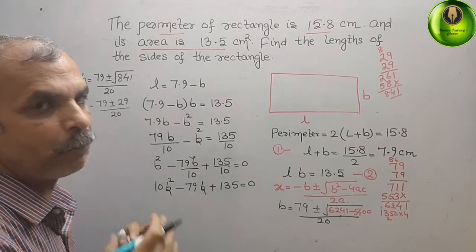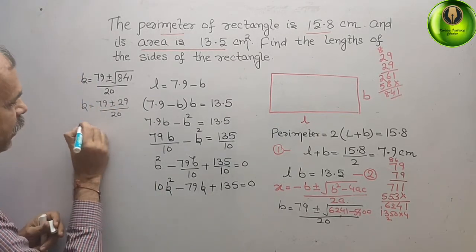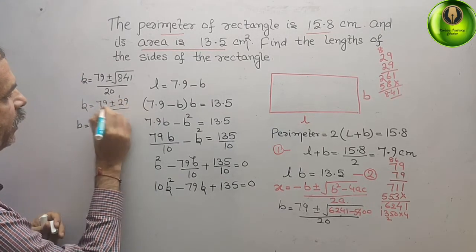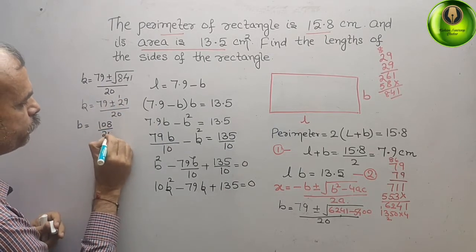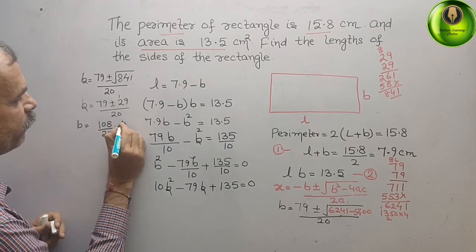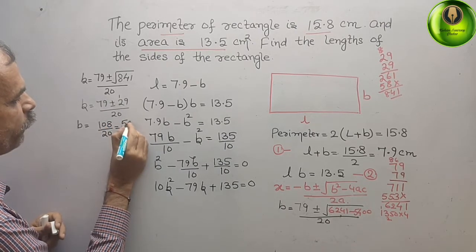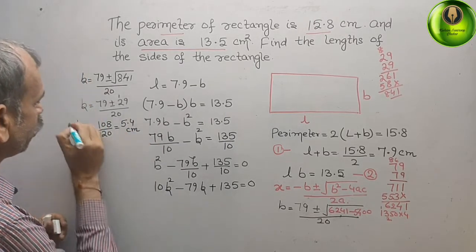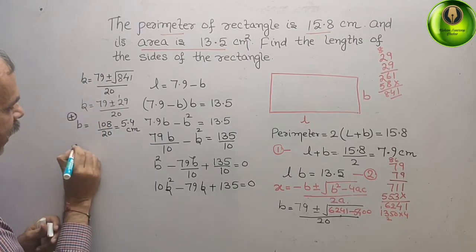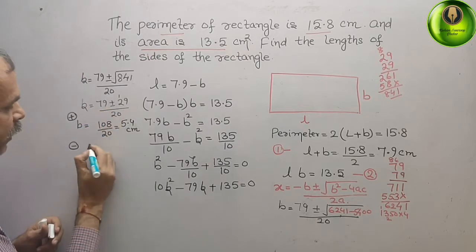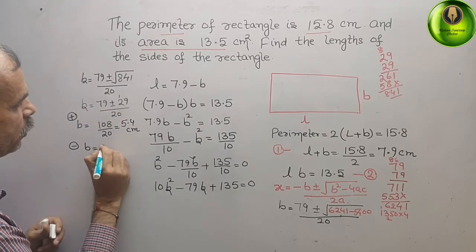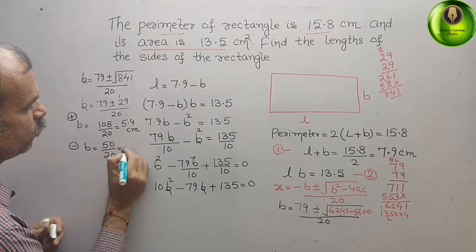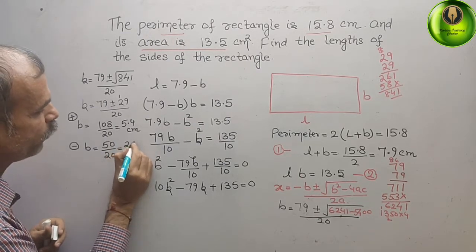So, what we will get, B is equal to 79 plus and minus 29 by 20. So, first, we will take a plus one. So, what we will get, if you take plus here, B is equal to 108 by 20. That is equal to, we can say, it is 5.4 centimeter. So, B is 5.4 centimeter if you take positive one. Now, if you take minus, negative one here, we will get, B is equal to 50 by 20. That is equal to 5 by 2. That is equal to 2.5 centimeter.